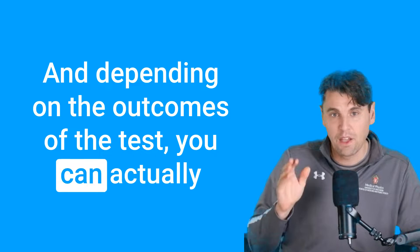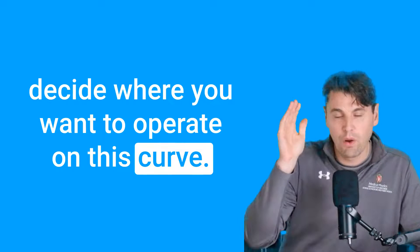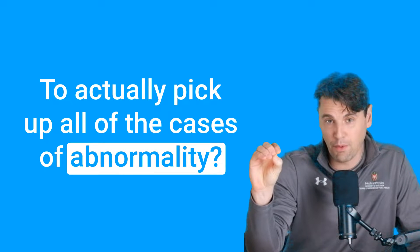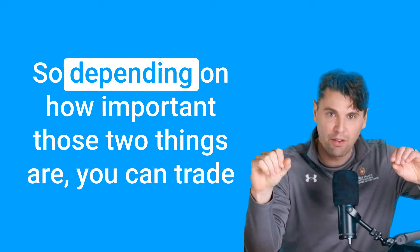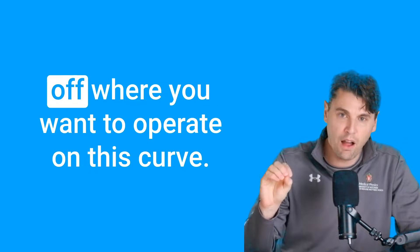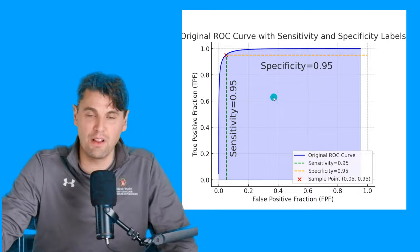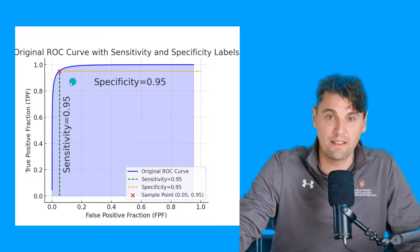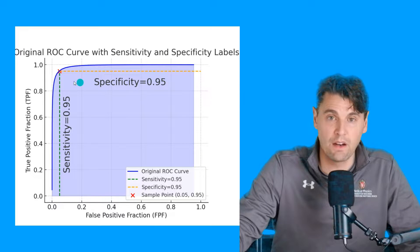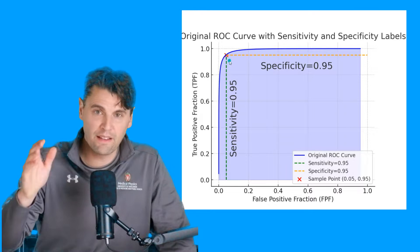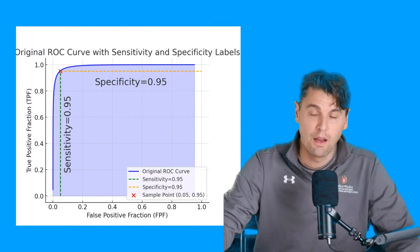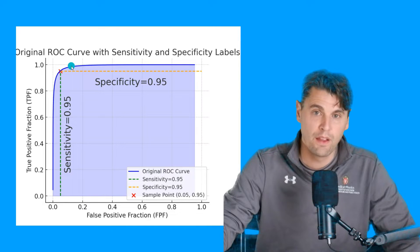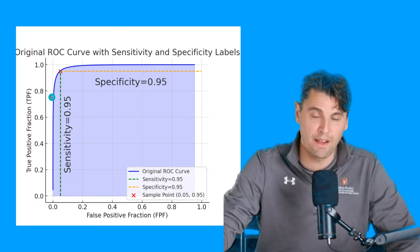Depending on the outcomes of the test, you can decide where you want to operate on this curve: is it more important to actually pick up all the cases of abnormality, or not to make a mistake when it's actually negative? The sensitivity is the y-axis value, and one minus the specificity is on the x-axis. If you draw a line from the operating point down, that is the specificity. For tasks with equal weight between sensitivity and specificity, you stay balanced, but you can move the threshold to shift your operating point up or down depending on priorities. Now you know how the area under the curve and ROC actually work.